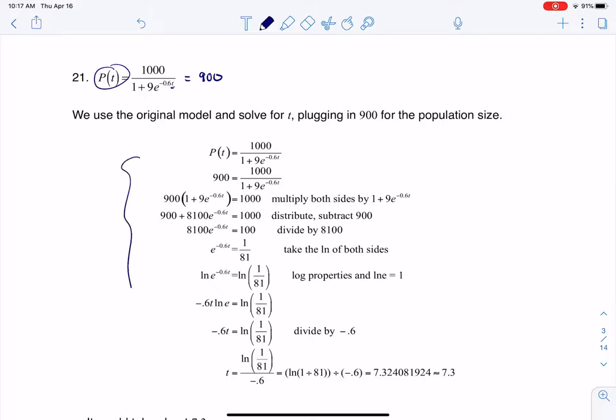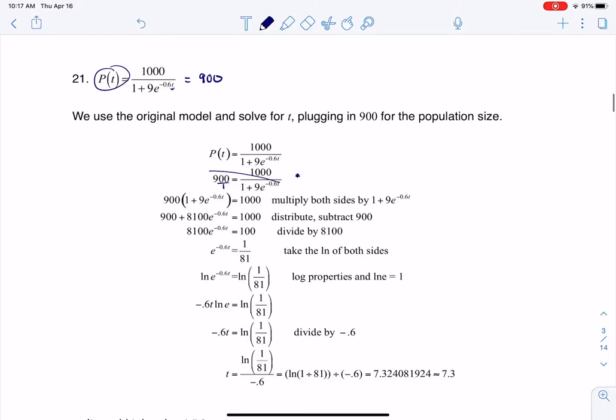So that's what you see me starting to do down here. Let's go through my steps. Once I set that equation equal to 900, the next thing I'm going to do is cross multiply because there's a fraction and my variable is in that denominator. You could think of it as multiplying both sides by 1 plus 9e to the negative 0.6t